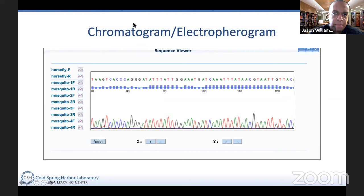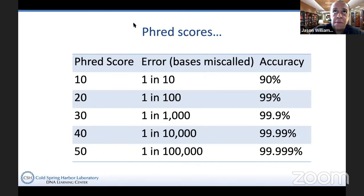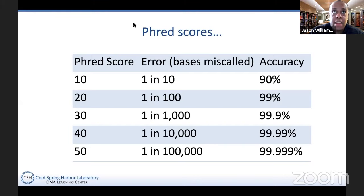The key message from last time was that you can have a difference in quality, and we actually have a way to quantify that. Look up something called a PHRED score — this is how we determine sequence quality. The PHRED score is a log scale running from 10 to 50, and it gives us an idea of what is the probability that any individual base has been called incorrectly. In the case of a PHRED score of 20, that means you have a 1 in 100 chance that the base is called incorrectly.